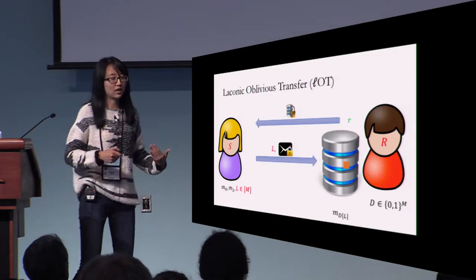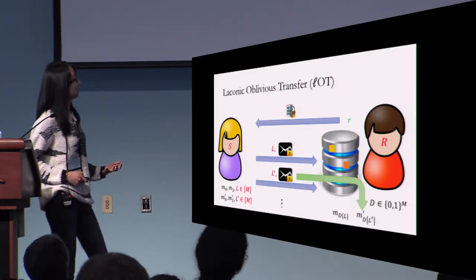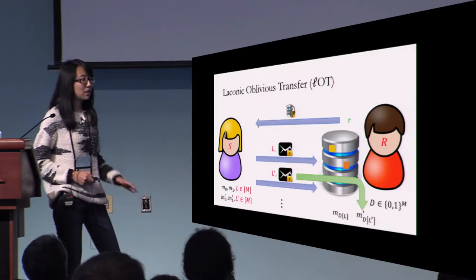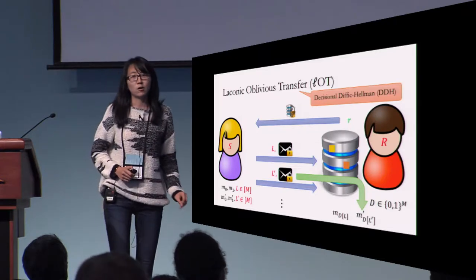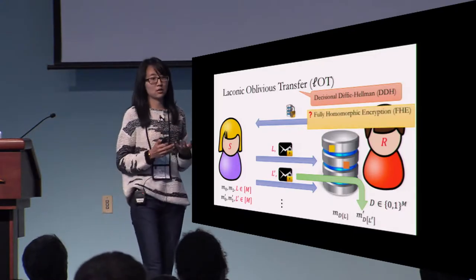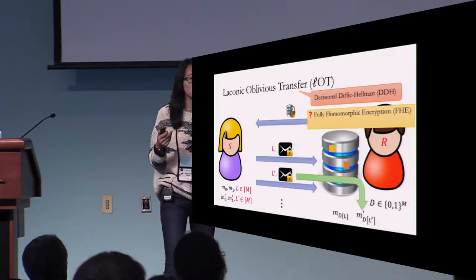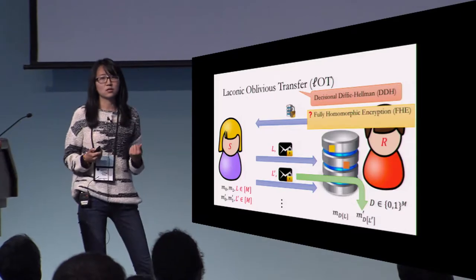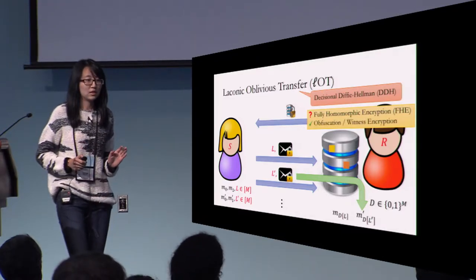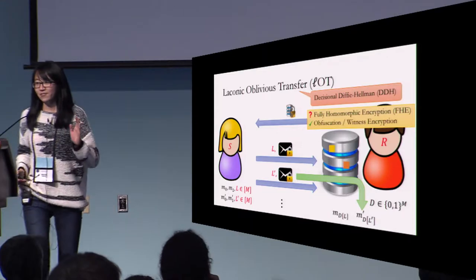Moreover, it can be done multiple times — the sender can later come up with a new pair of messages and a new location and do it again, any arbitrary polynomial number of times. Our main result is that we can construct such a primitive from the decisional Diffie-Hellman assumption. I want to stress that we don't even know how to construct laconic OT from fully homomorphic encryption FHE, because usually you'd think FHE is a very natural and powerful tool to reduce communication complexity, but it turns out it doesn't help here. The only natural way to construct it is via very strong assumptions like obfuscation or witness encryption. So this is our result — five minutes up, you're good to go.